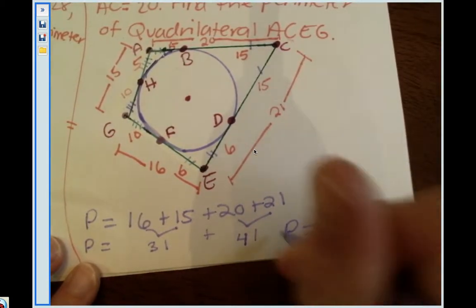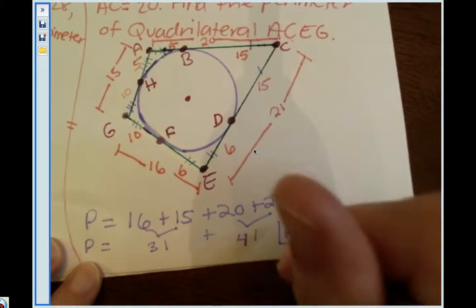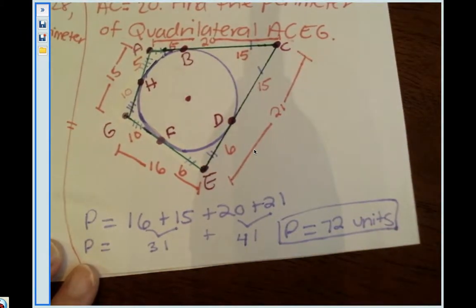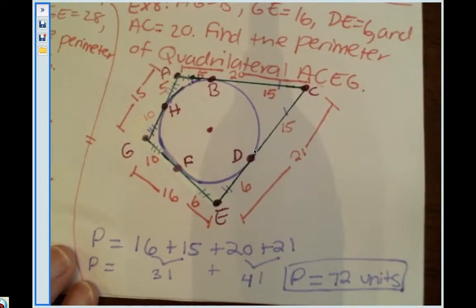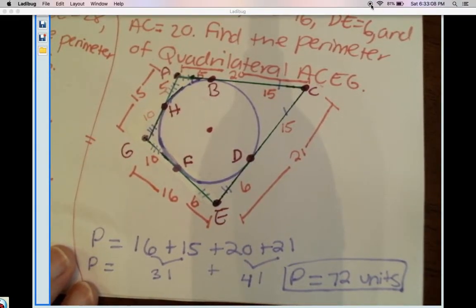My perimeter equals 72 units, since I don't have any units labeled. And that problem's done. Look at that, awesome job.